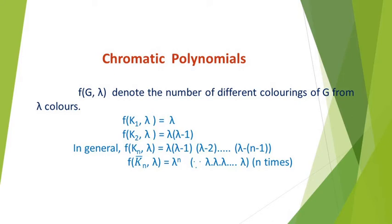Next we find the value for f(K2, lambda), where K2 is a complete graph on two vertices. Here we get the value lambda(lambda - 1), because for the first vertex we have lambda colors and the second vertex has only lambda minus 1 possibilities, since we already assigned one color to the first vertex. So f(K2, lambda) = lambda(lambda - 1).